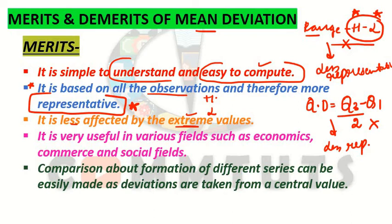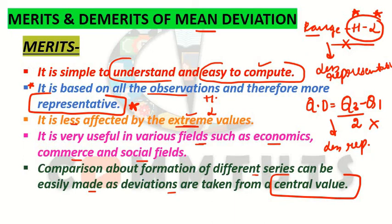The fourth merit is that it is very useful in various fields such as economics, commerce, and social fields. The fifth and last merit is that comparison of different series can be easily made, as deviations are taken from a central value. Because the deviations are taken from the central value — meaning we calculate mean or median — and take deviations from mean or median, the comparison between different series becomes easy. So these are the five main merits of mean deviation.